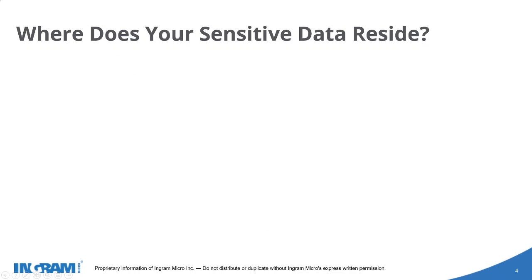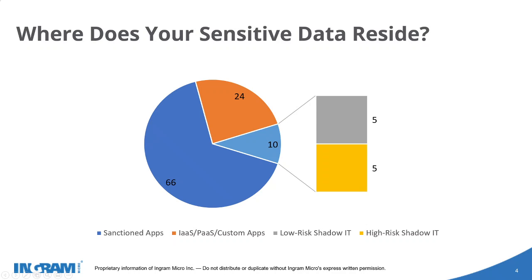There was a survey performed asking enterprise customers where their sensitive data resided within cloud applications. It shouldn't come as any surprise that about 66% of sensitive data — data containing privacy information or personal identifiable information — resided in sanctioned applications. 24% resided in IaaS, PaaS, and custom applications. The really surprising finding was that up to 10% of sensitive data resided within shadow IT applications, where the IT department has no idea these applications exist and no visibility into the data being sent to and from them.